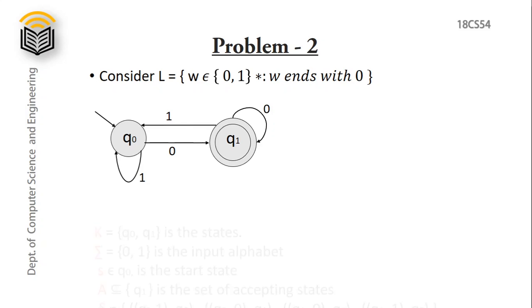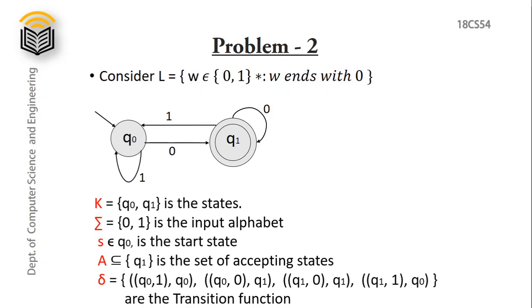5-tuples for Problem 2: K has 2 states, q0 and q1. Sigma is 0 and 1. S is starting state q0. A is the subset of K containing only accepting state q1. Transition function delta: q0 upon 1 remains on q0; q0 on 0 transitions to q1; q1 upon 0 remains in q1; and q1 upon 1 goes to q0, the non-accepting state.